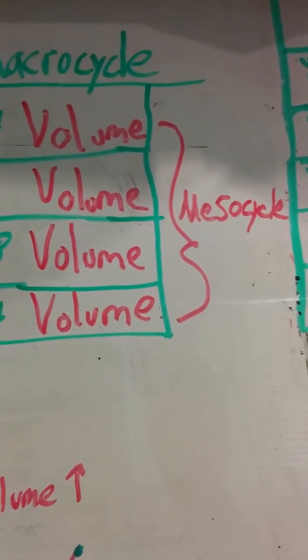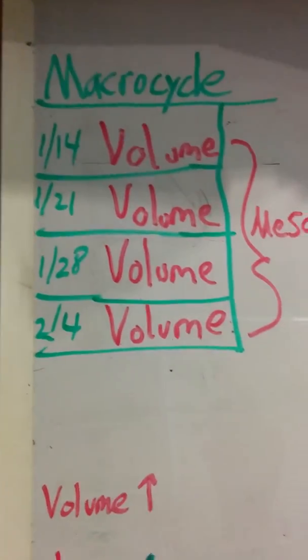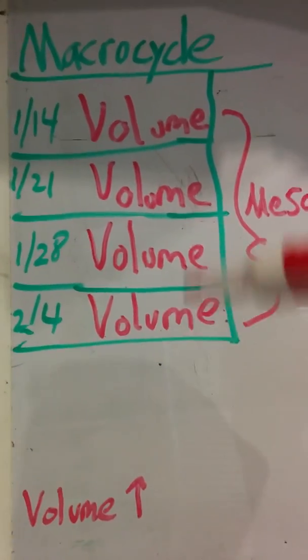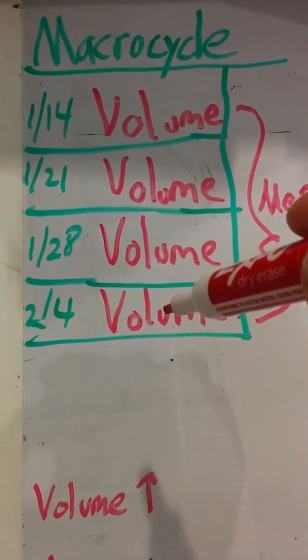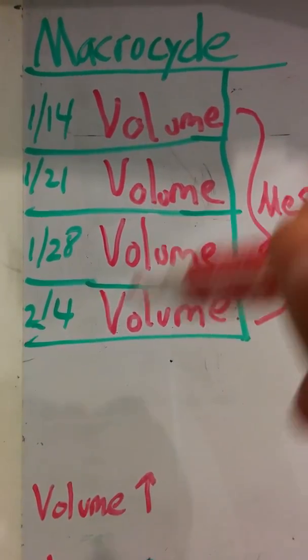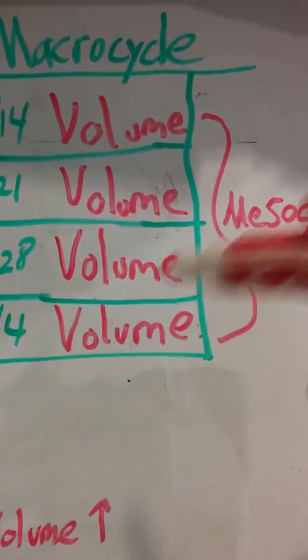One step below that will be the mesocycle, which is each training phase, which a lot of times ends up being a four-week phase. So here we're looking at a four-week volume block at the beginning of a macrocycle. So this would be one of our mesocycles, and we can even call it mesocycle 1.